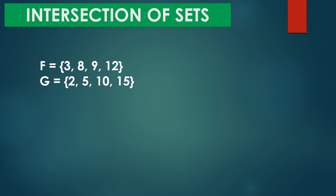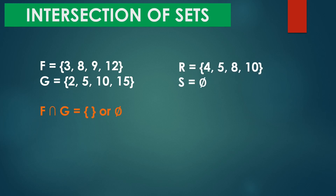Next: set F equals {3, 8, 9, 12} and set G equals {2, 5, 10, 15}. So wala tayong intersection. Tama? Kasi walang common elements, so the intersection of the two sets is equal to the null set. Again, kapag sinabi natin na intersection of sets, tignan natin yung common elements kasi sila yung magiging intersection ng sets natin.